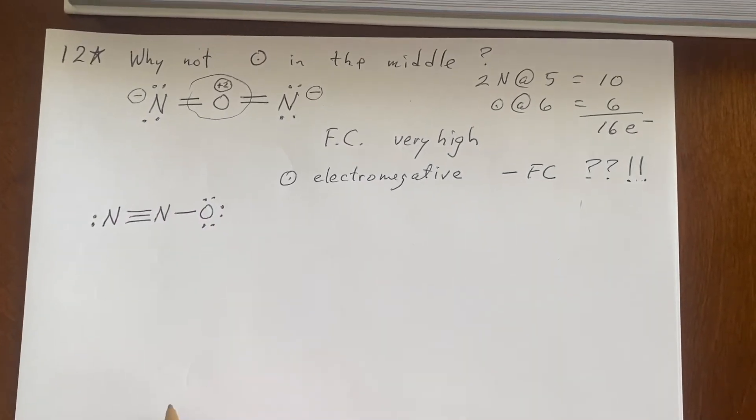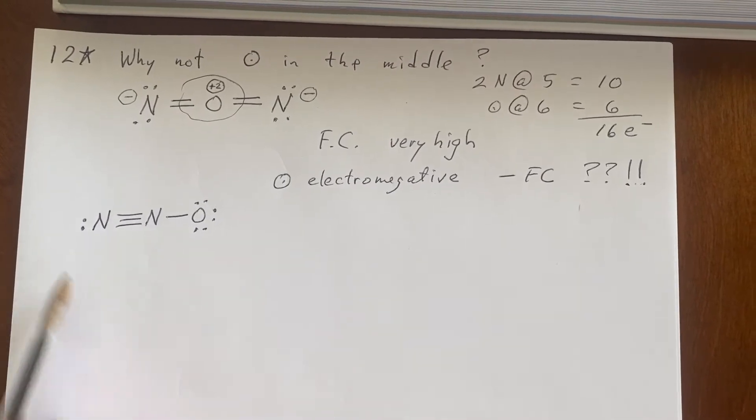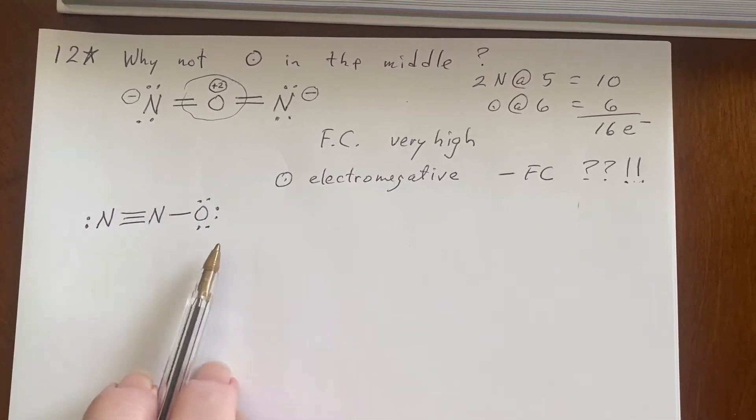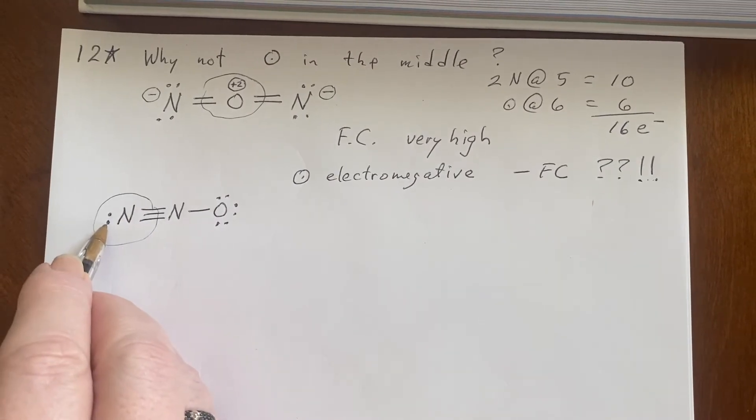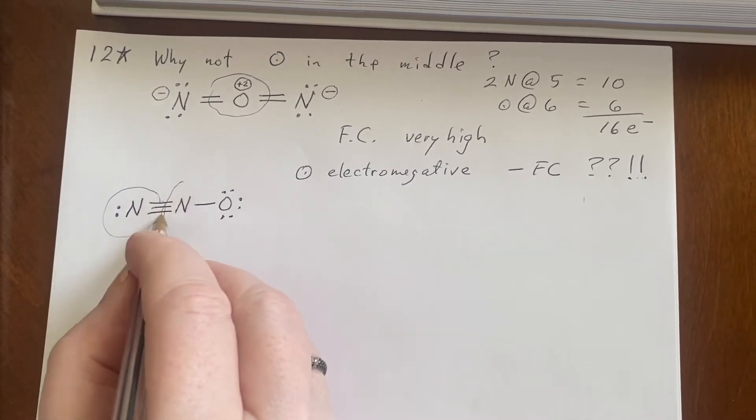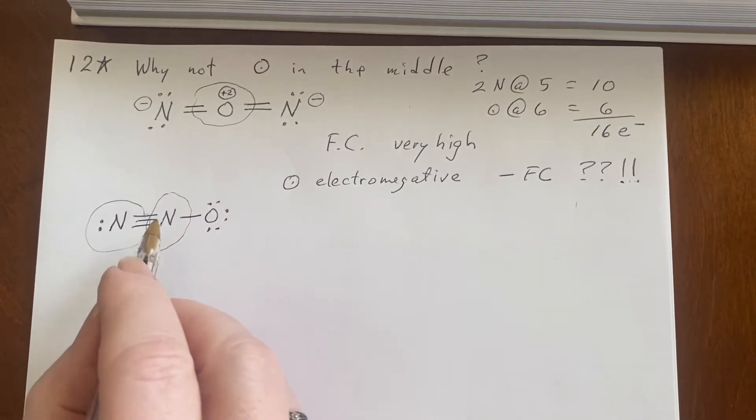They've already been written, so we can analyze each of them. So the first one was this, and we're just going to formalize. What are the formal charges here? One, two, three, four, five. It came with five. It has five. No problem. No formal charge involved at all. It's a zero.